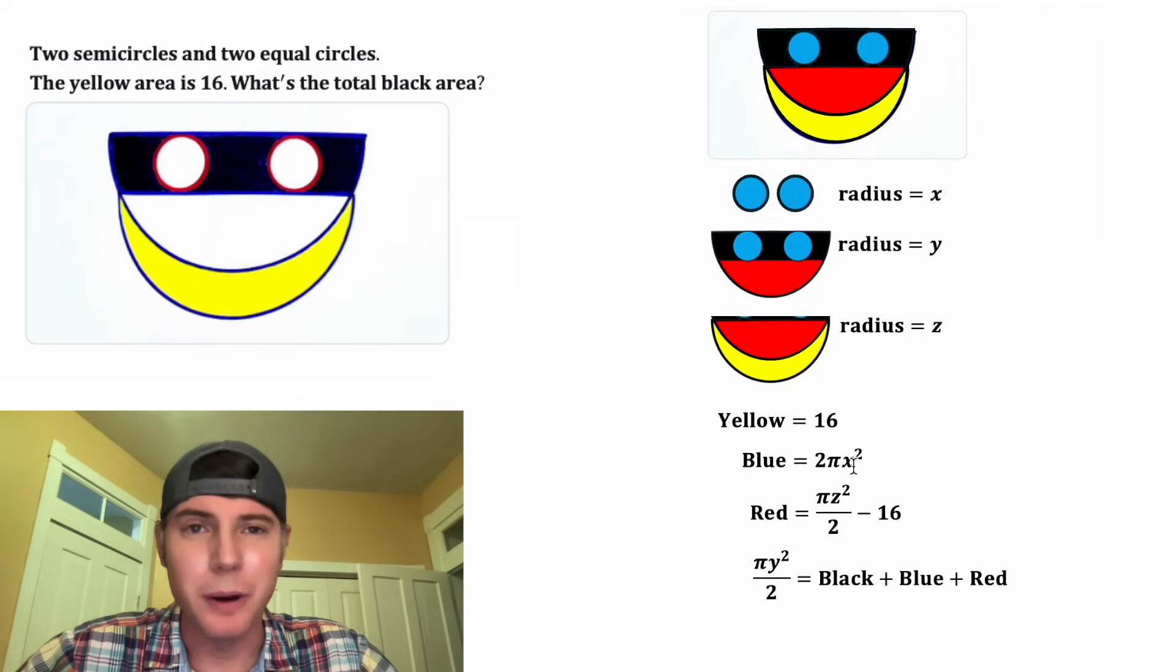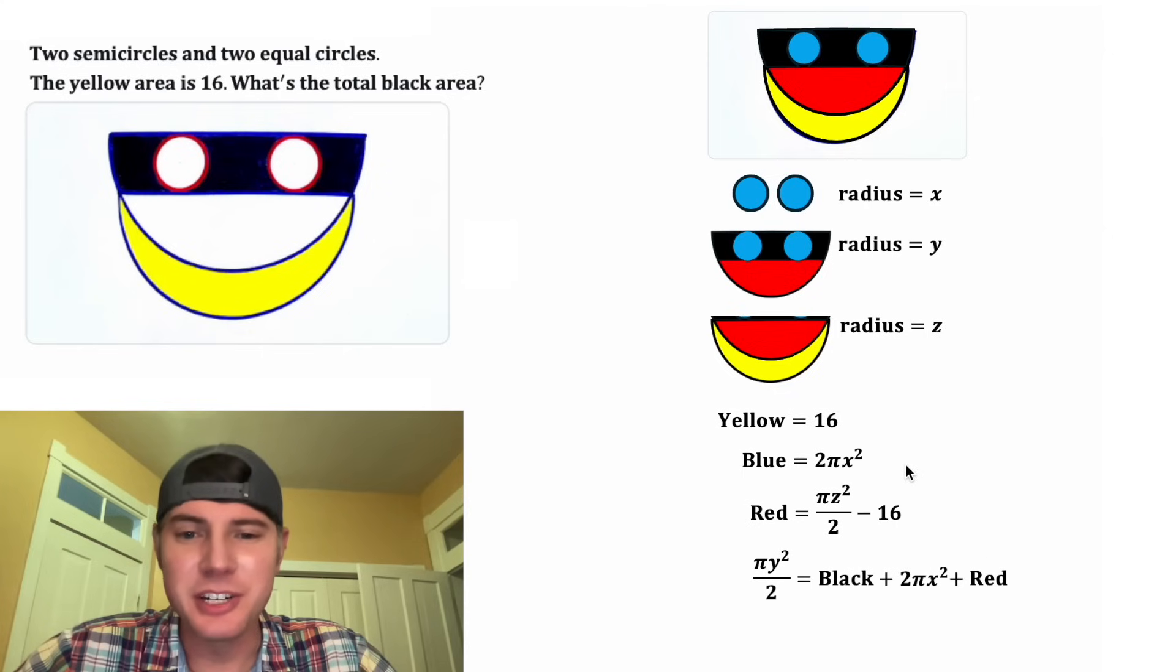So we know that the blue region is equal to 2 pi X squared. So let's plug that in for blue. And then we know that the red region is equal to this right here. So let's plug that in for red.